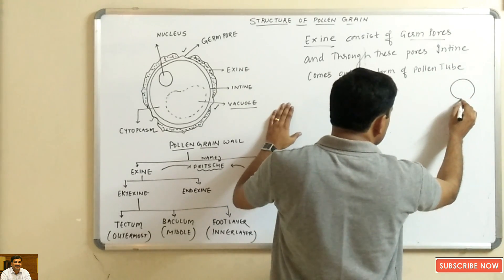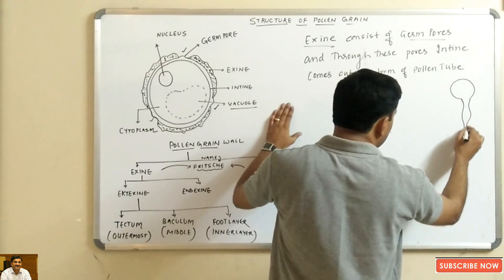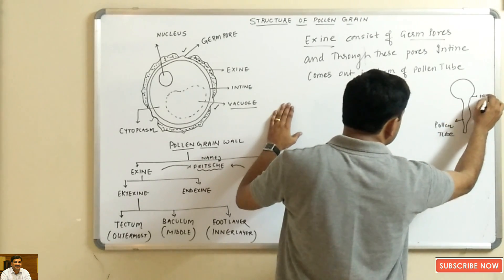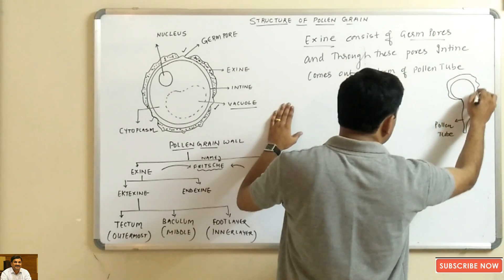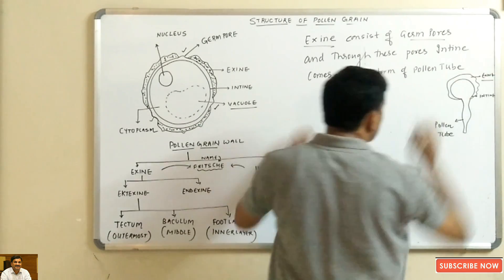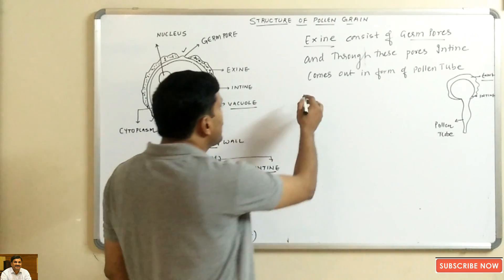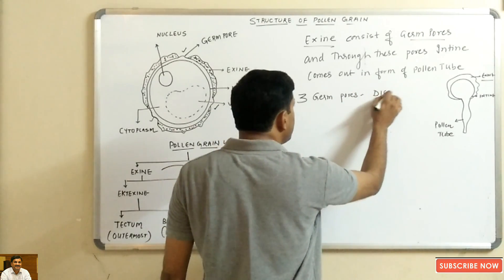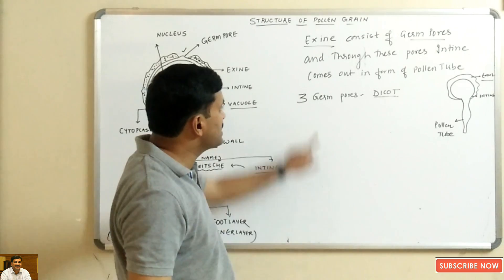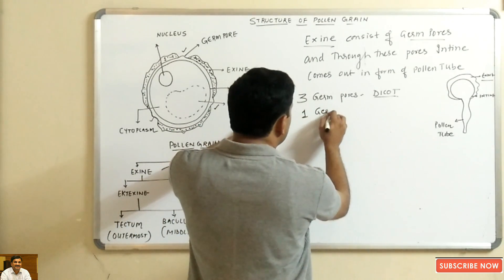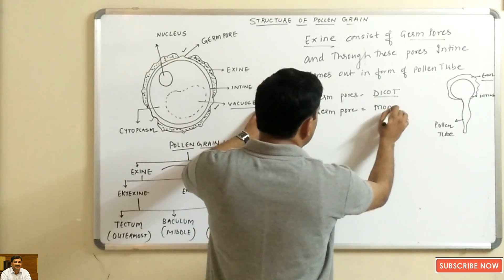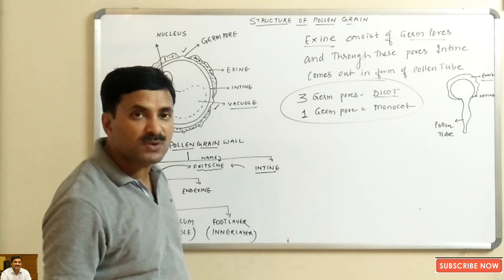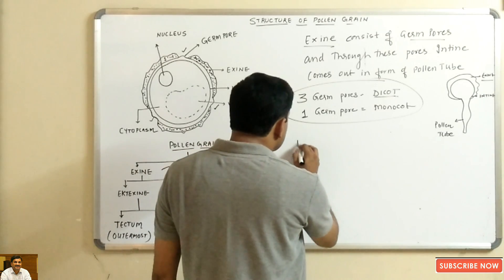Through these germ pores, the intine comes out in the form of a pollen tube. So from the germ pore, the pollen tube comes out. The intine layer comes out through the germ pore as the pollen tube. There are three germ pores in dicot plants and one germ pore in the pollen grain of monocot plants.